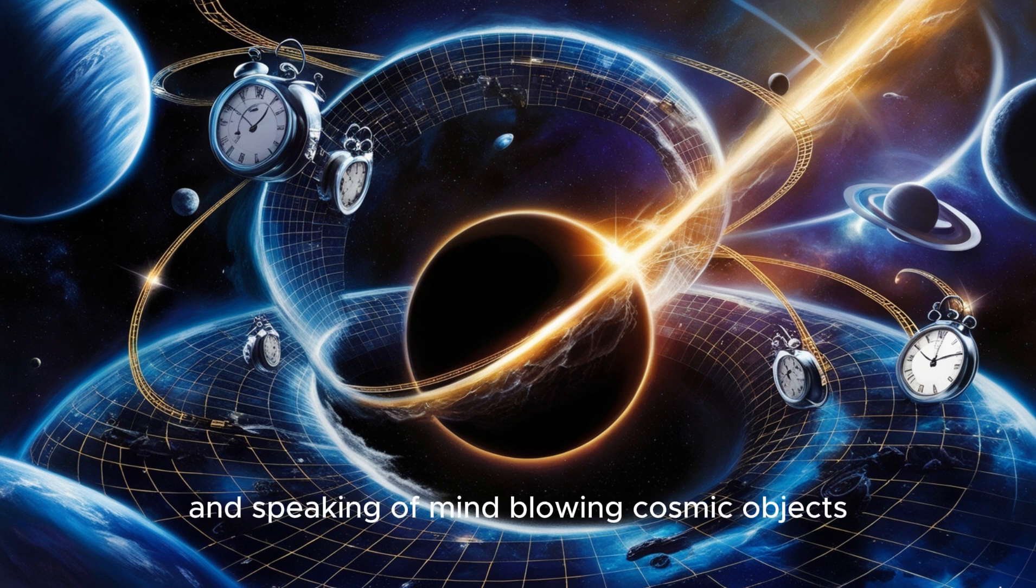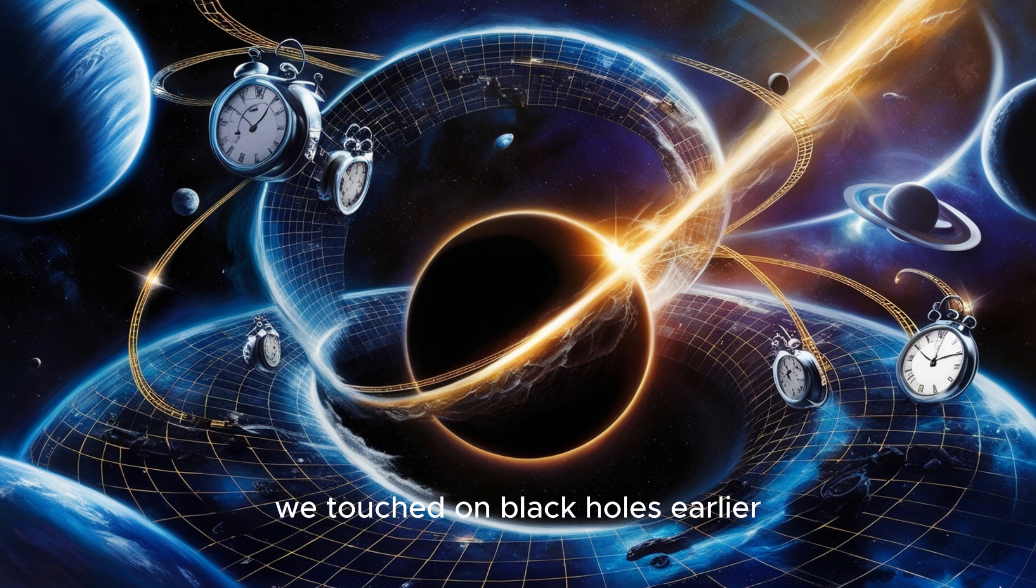I like that, a time capsule. And speaking of mind-blowing cosmic objects, we touched on black holes earlier. Can you tell us a bit more about them? Sure. Black holes are, in a way, the ultimate consequence of Einstein's theory of general relativity. They're regions of space-time where gravity is so intense that nothing, not even light, can escape. So how does something become a black hole? Well, imagine a star much bigger than our sun. And at the end of its life, it collapses in on itself. As it collapses, it gets denser and denser. Its gravity gets stronger and stronger. Eventually it gets so dense that it creates a singularity, a point where gravity is infinitely strong. And that's a black hole.